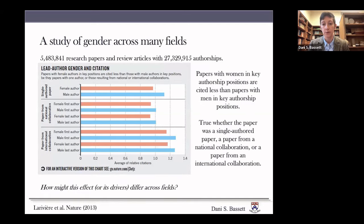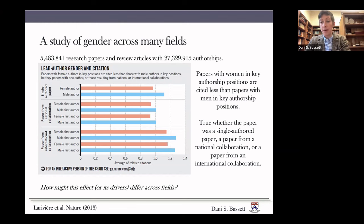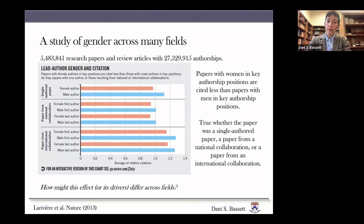Using this approach, a group not our own wrote an interesting paper in Nature in 2013 studying over five million research papers and review articles with 27 million authorships. They found that papers with women in key authorship positions — single author, first author, or last author — are cited less than papers with men in key authorship positions. This held for single-authored papers, national collaborations, and international collaborations, whether as first or last author — a very consistent effect.